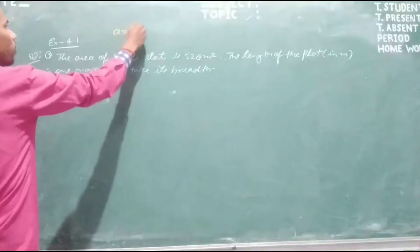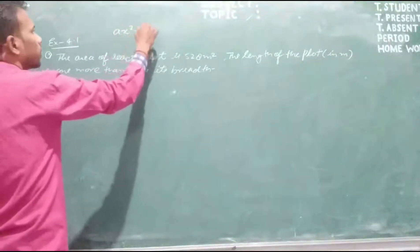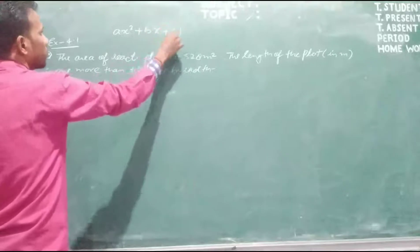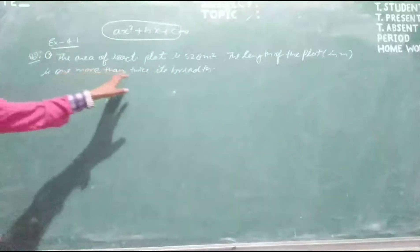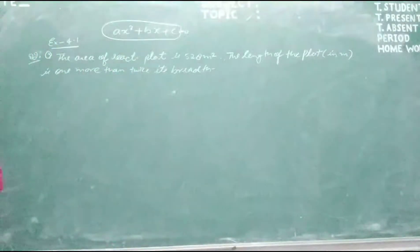The general form of a quadratic equation is X square plus BX plus C equal to 0. We have to represent this situation in the form of a quadratic equation.